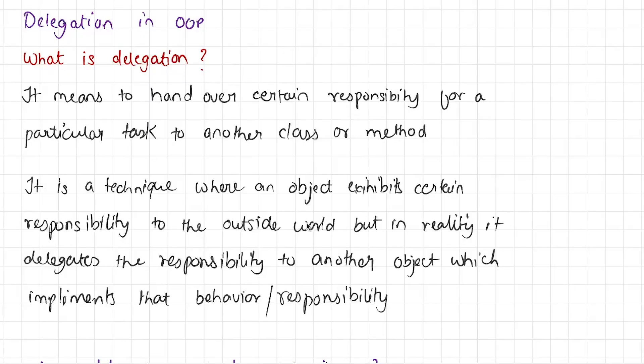Let's begin this video with the very first question: what is meant by delegation? In the context of object oriented programming, delegation means to hand over certain responsibility for a particular task to another class or method. It is a technique where an object exhibits certain responsibility to the outside world, but in reality it delegates the responsibility to another object which implements that behavior or responsibility.